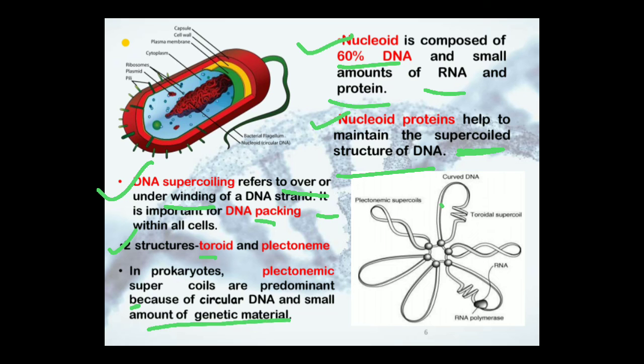Here you can see that plectonemic supercoils are shown as curved DNA, and also toroidal supercoils, RNA, and RNA polymerase are indicated in the diagram.